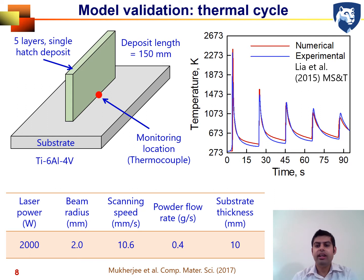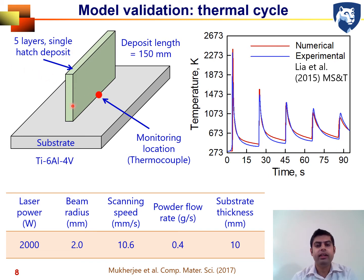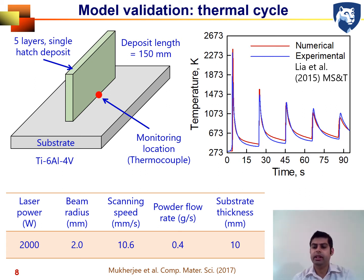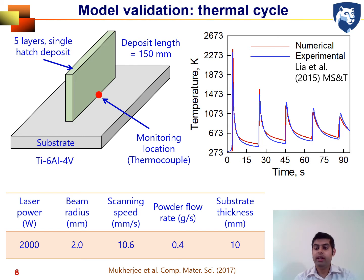To illustrate the accuracy of these results, experiments were done using a titanium alloy where the temperature was monitored using a thermocouple near the deposit-substrate interface across five deposited layers forming a thin wall. The computed temperature cycle at the same thermocouple location matches reasonably well with the experimental values, which gives us confidence that we can use this model to train machine learning and find ways to control defect formation.